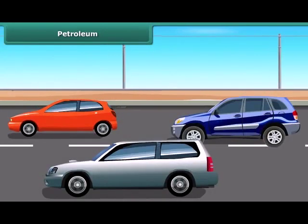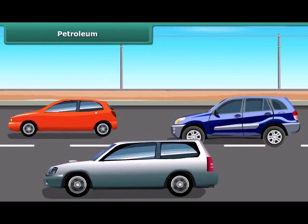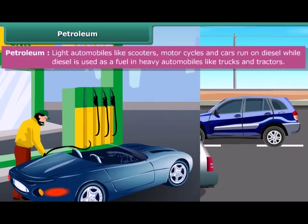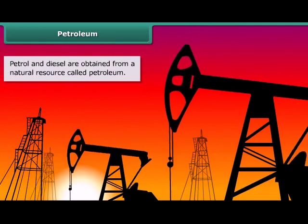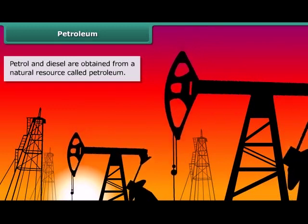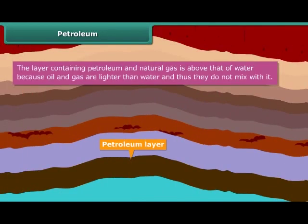Friends, you may be fond of luxury cars and vehicles, but do you know what fuel they run on? Most of these run on either petrol, diesel or compressed natural gas, also known as CNG. Petrol and diesel are obtained from a natural resource called petroleum. Petroleum and natural gas deposits exist as a layer above the water layer underground.